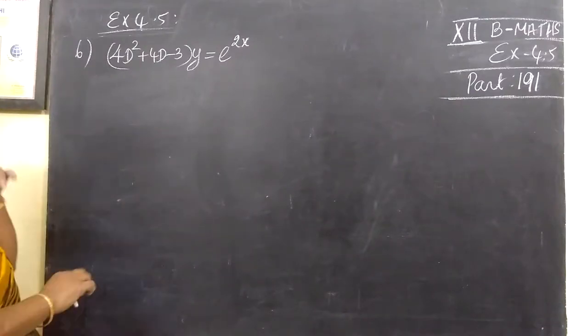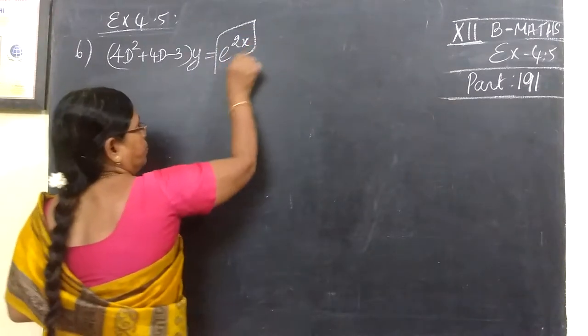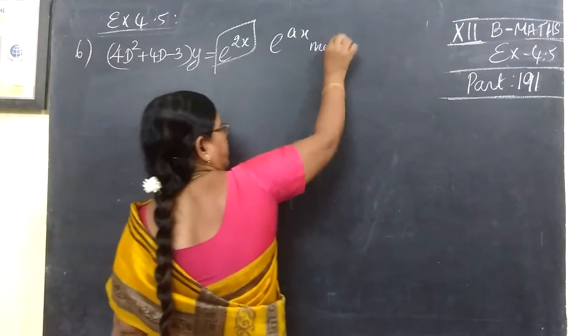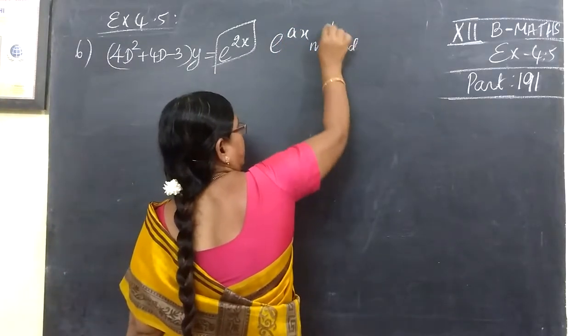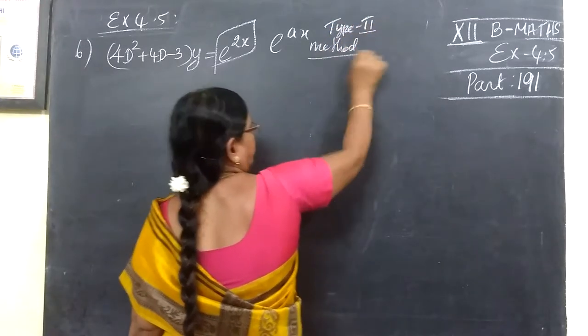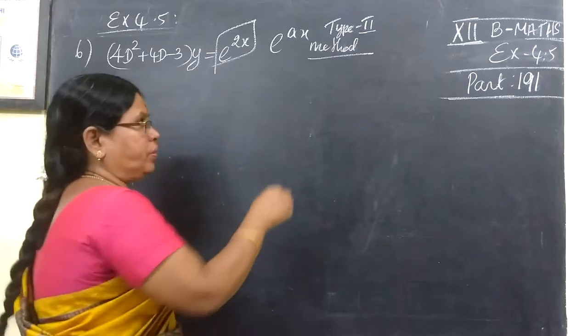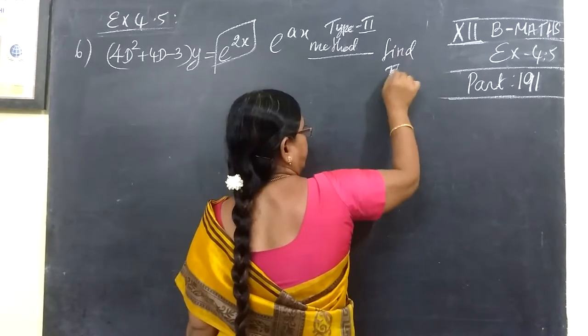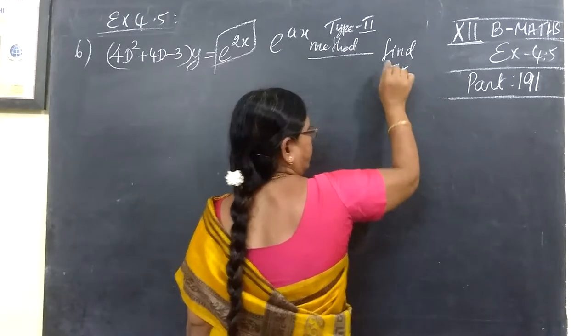So next time, the question was 6. Now we will see the question, e to the ax, size 2 we are taking. Size 2, what is the question? 5, and a1 the value.